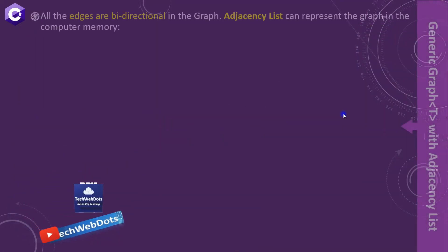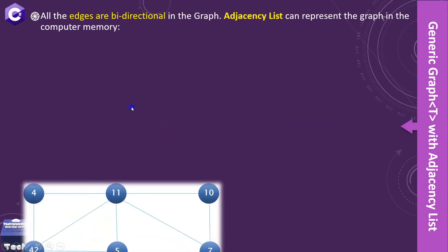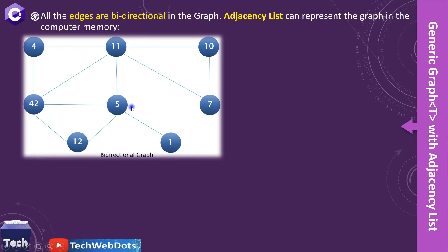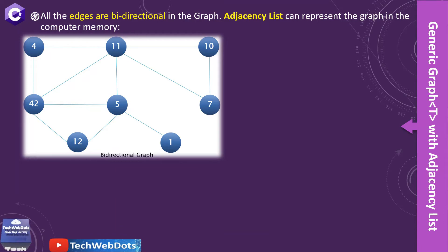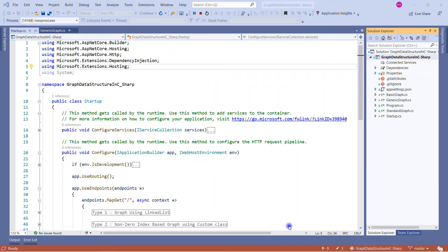All edges of our graph are bi-directional — you can see this is a bi-directional graph. I am going to implement an adjacency list in this session. Let's switch to Visual Studio to see all these things in action. This is the same solution I was using in all my previous videos.